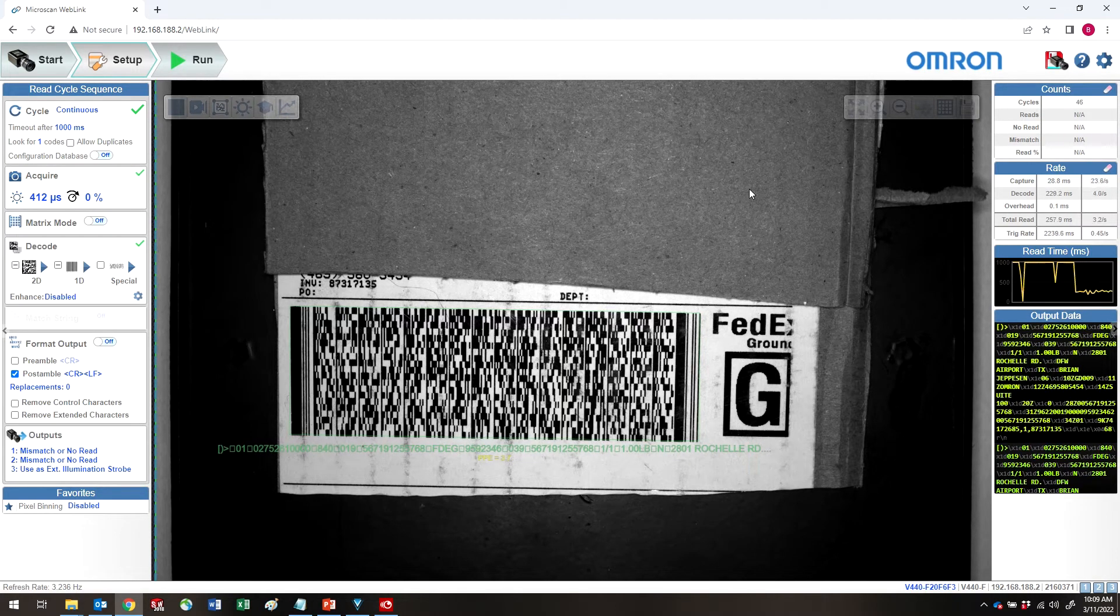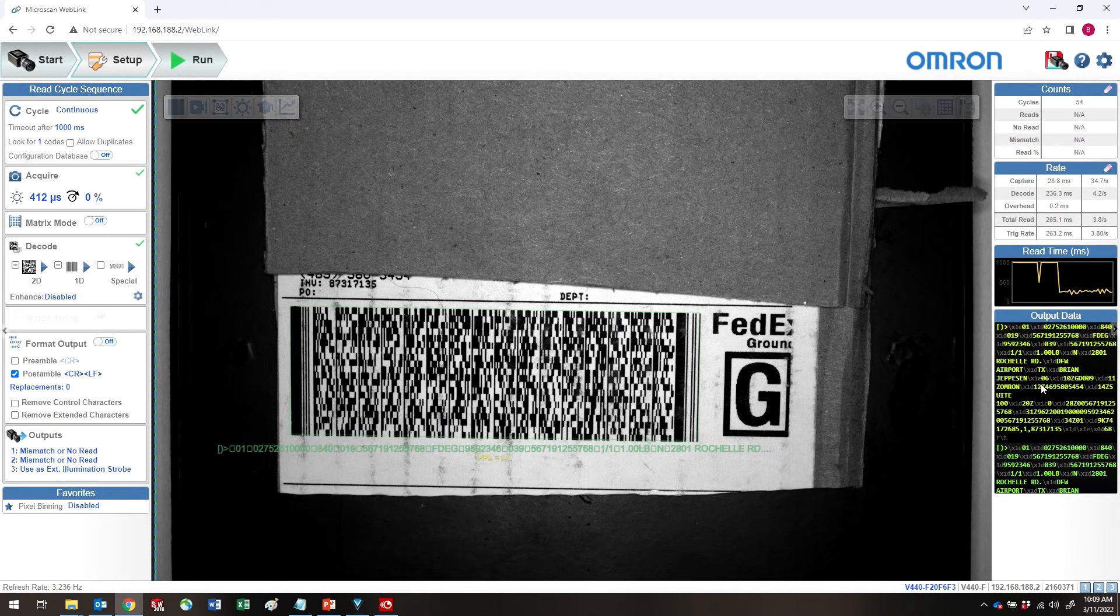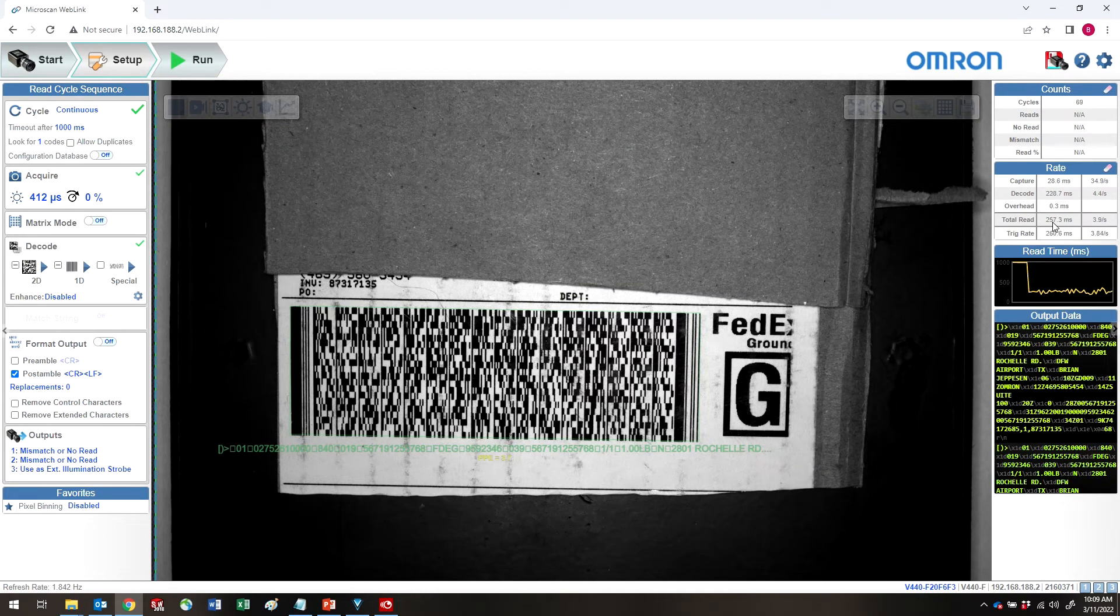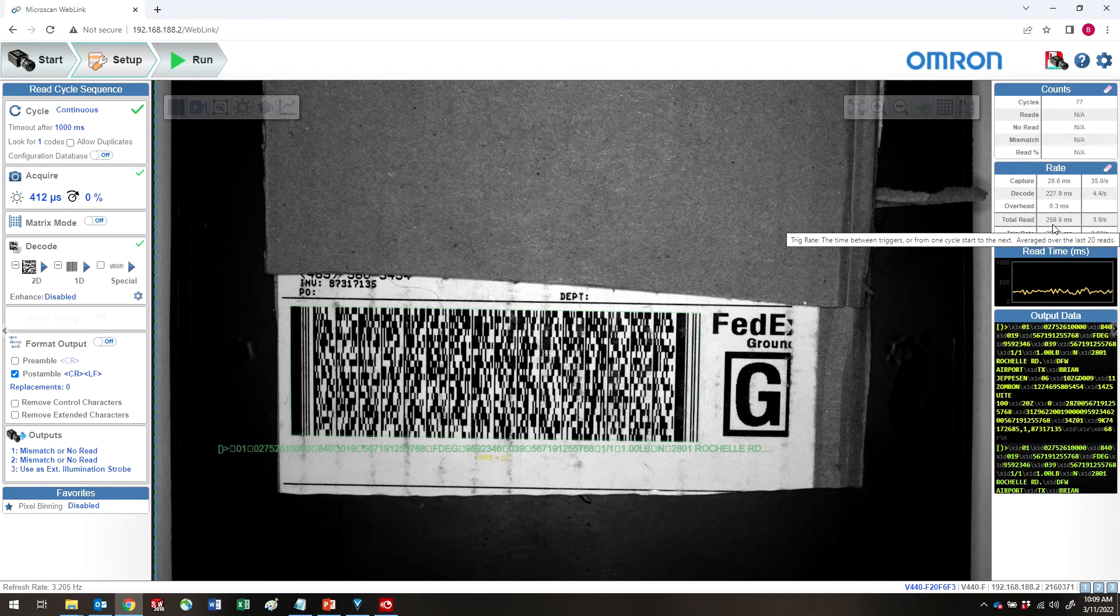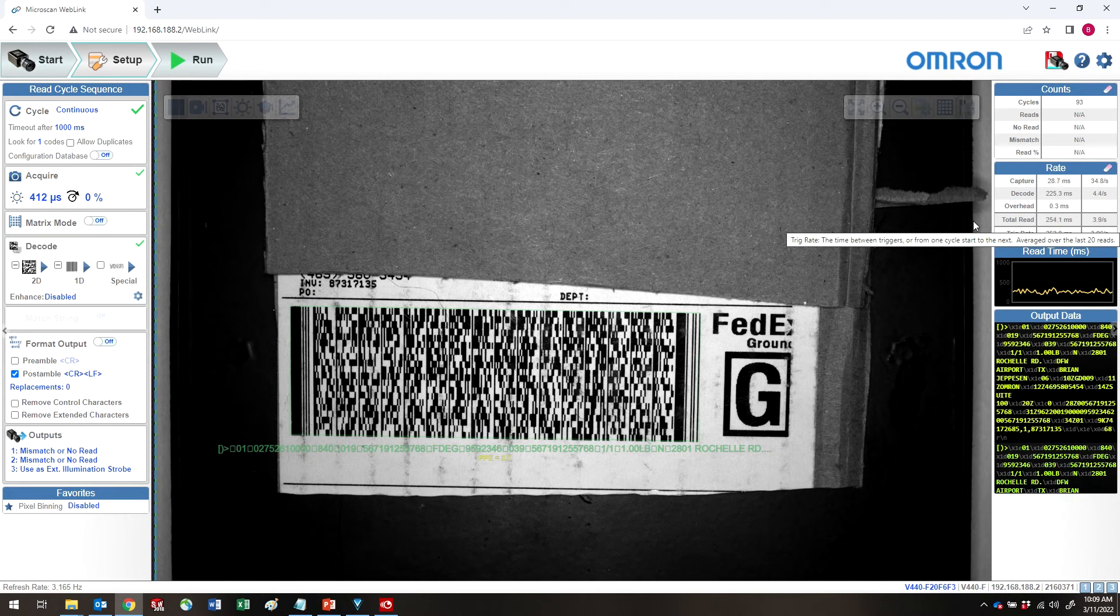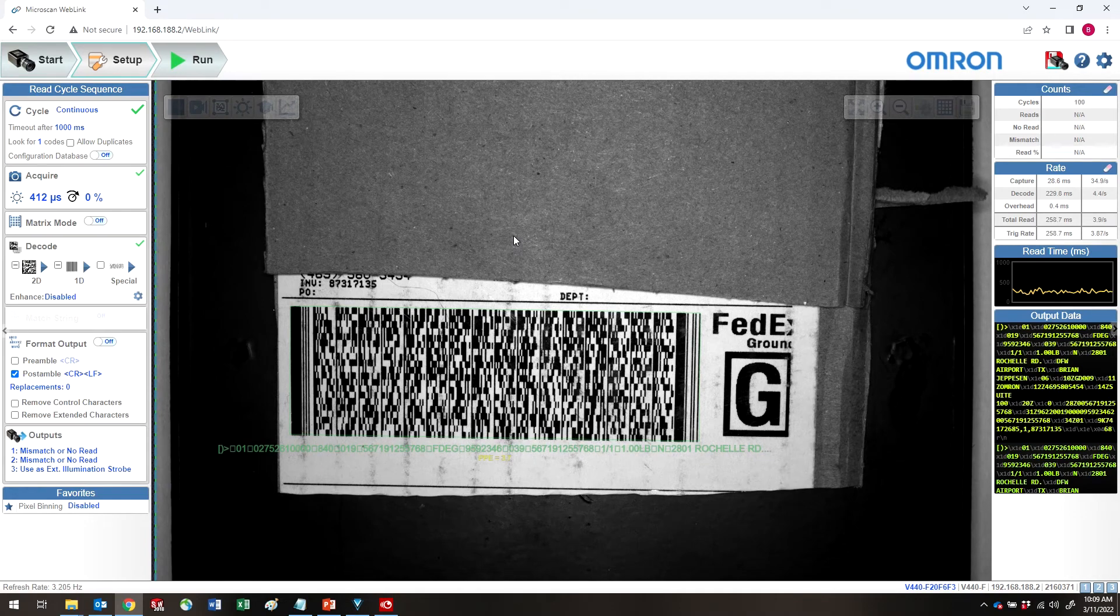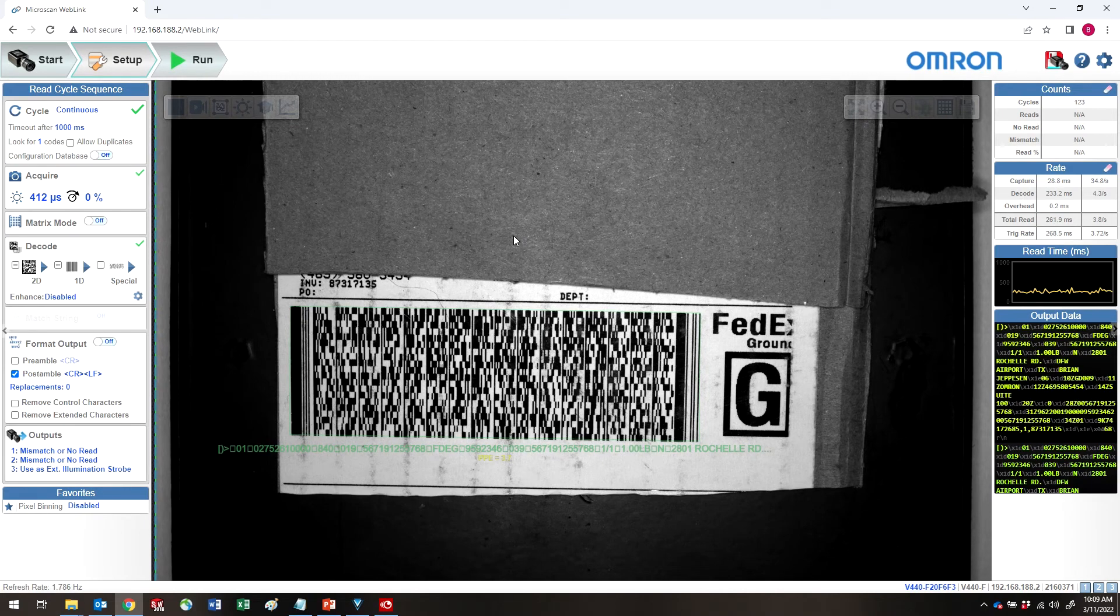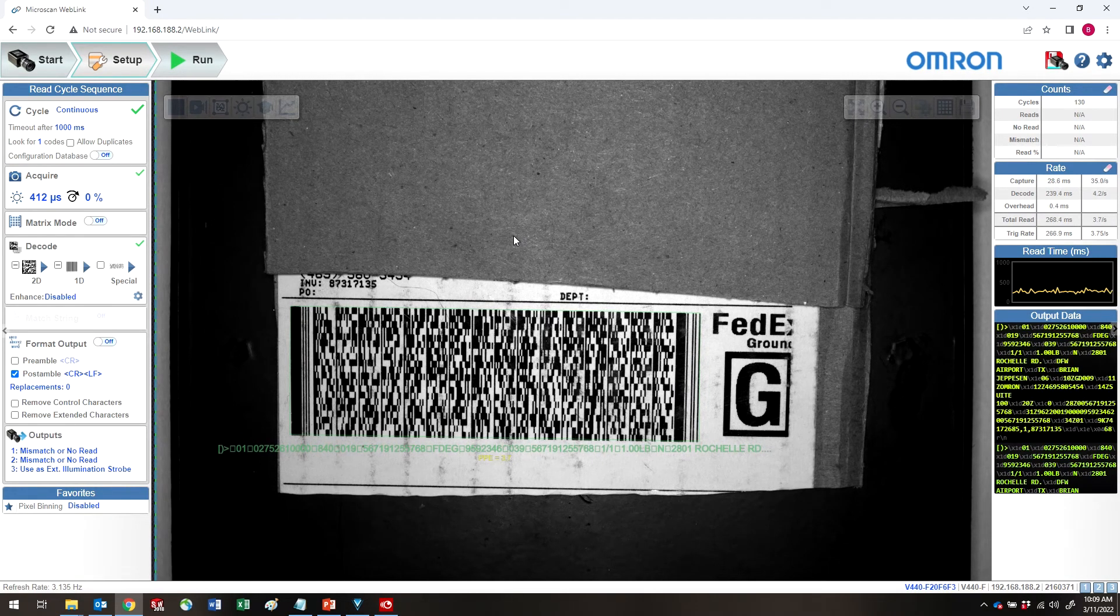Now, currently, we are running about 260 milliseconds for a code read. We can, through some optimization, do a much faster read than that. The first and most important thing is to shrink down your window so we're not searching the entire image for the code.